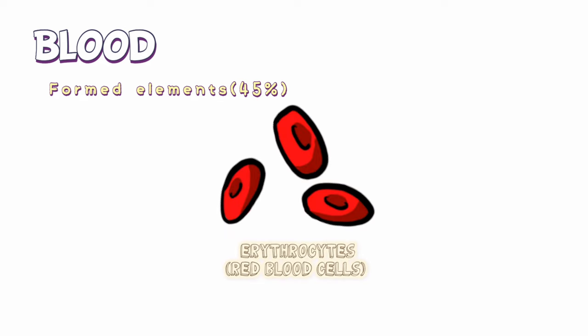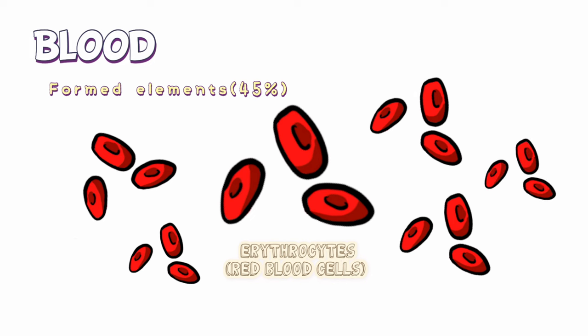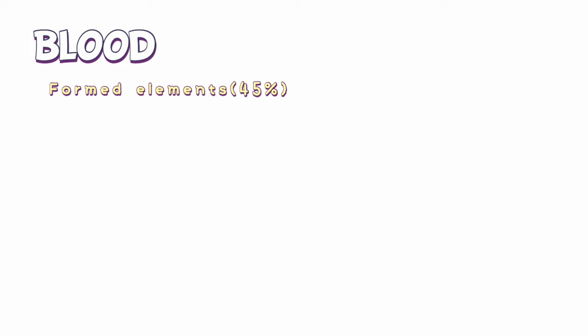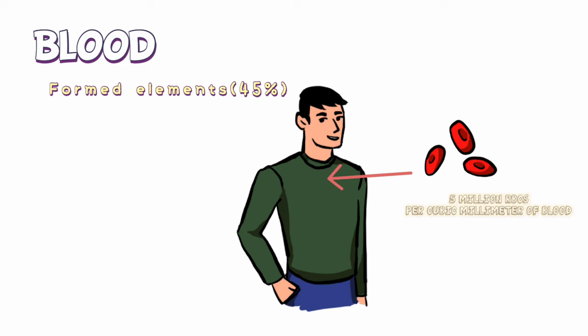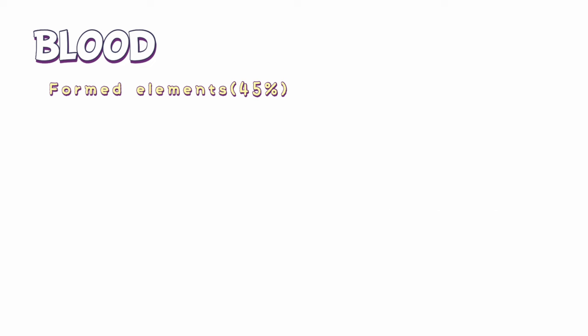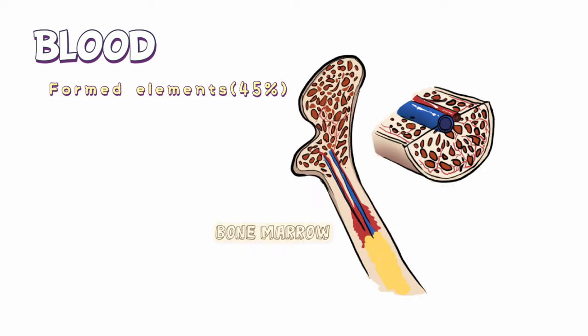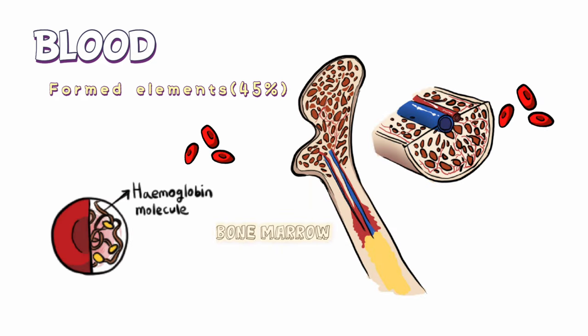Erythrocytes, or red blood cells (RBCs), are the most abundant of all the cells in blood. A healthy adult man has, on average, 5 million RBCs per cubic millimeter of blood. They are formed in the bone marrow and have a red-colored, iron-containing protein called hemoglobin.